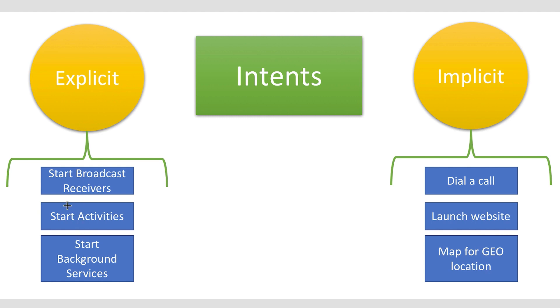Examples of explicit intents include starting a broadcast receiver, starting activities, and starting background services. All of these are part of your own application — they are not used for external applications receiving the intent.